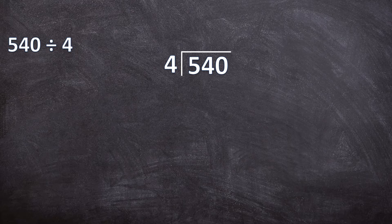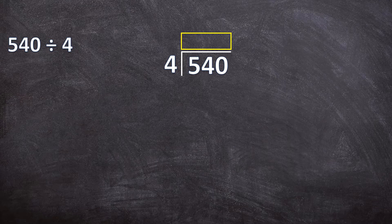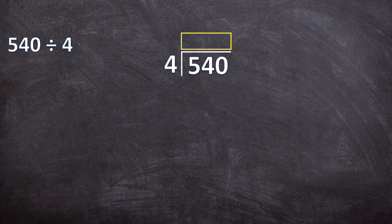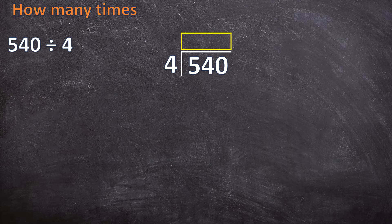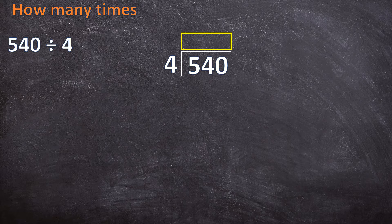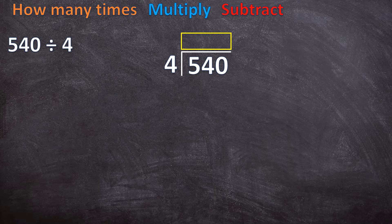Our answer, our quotient, will go on top of the bracket. So when you are completing long division, there are four steps I want you to remember. The first one, how many times, the second one, multiply, the third one, subtract, and the fourth one, bring down.